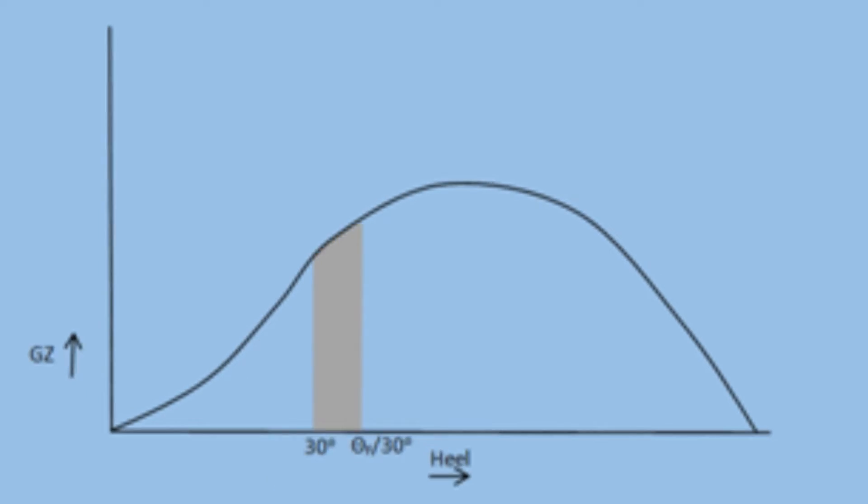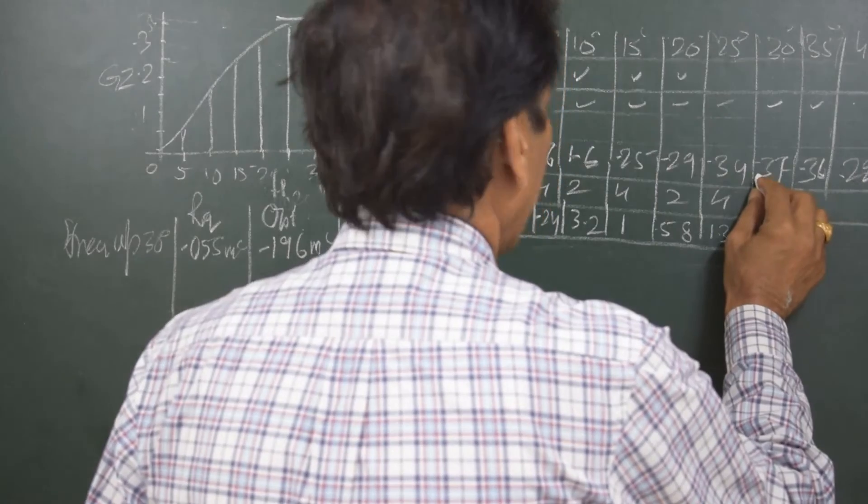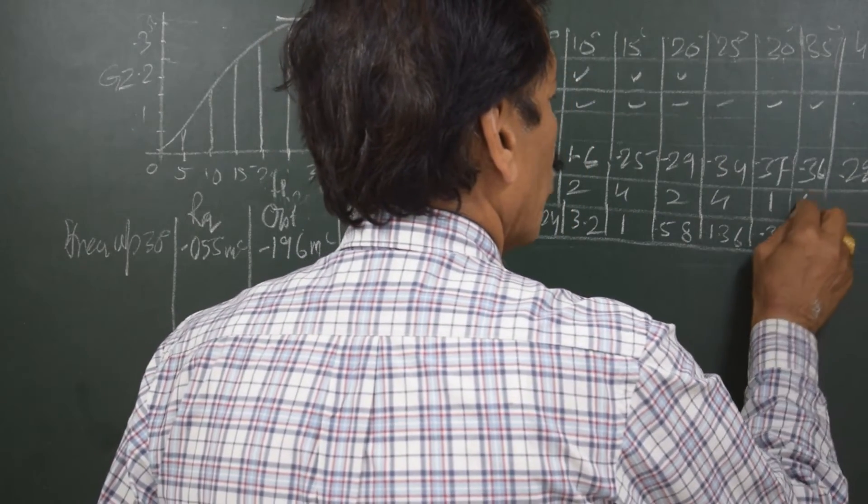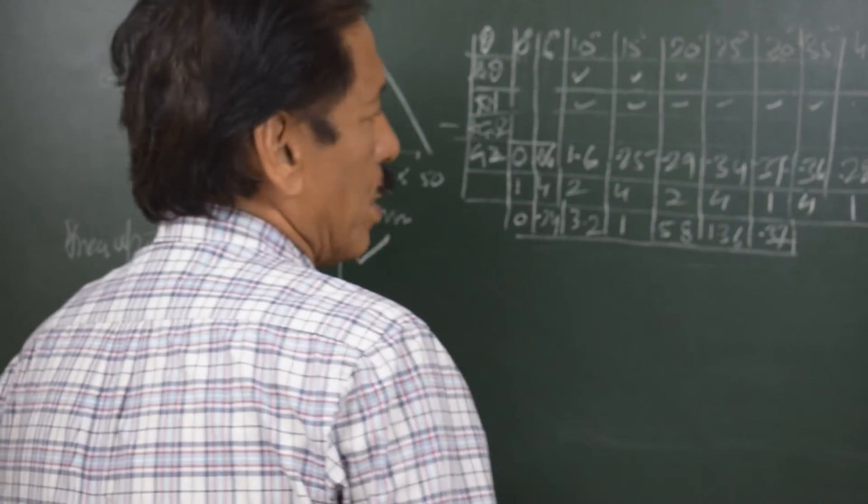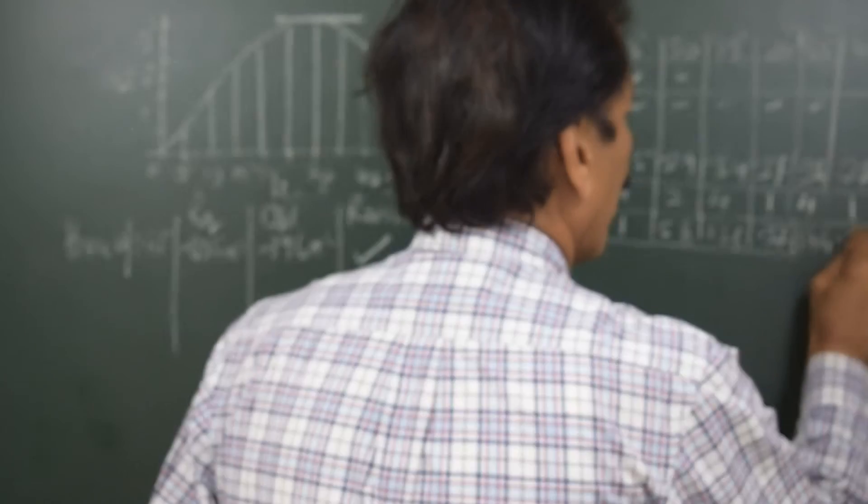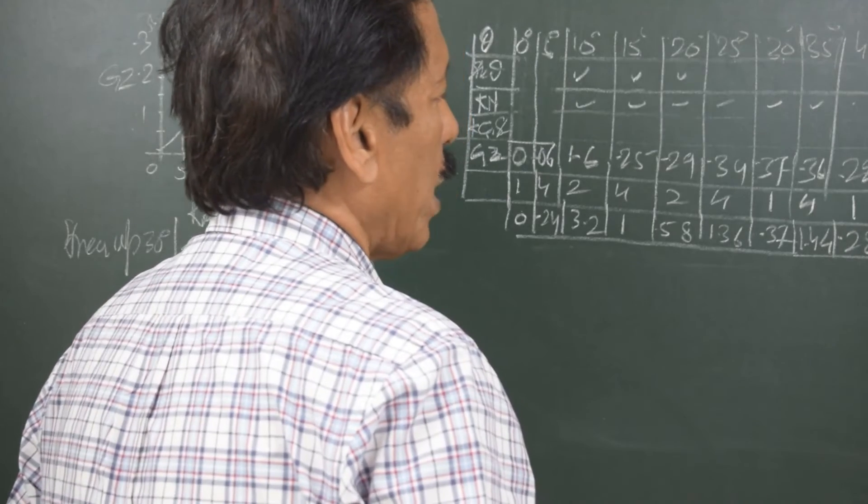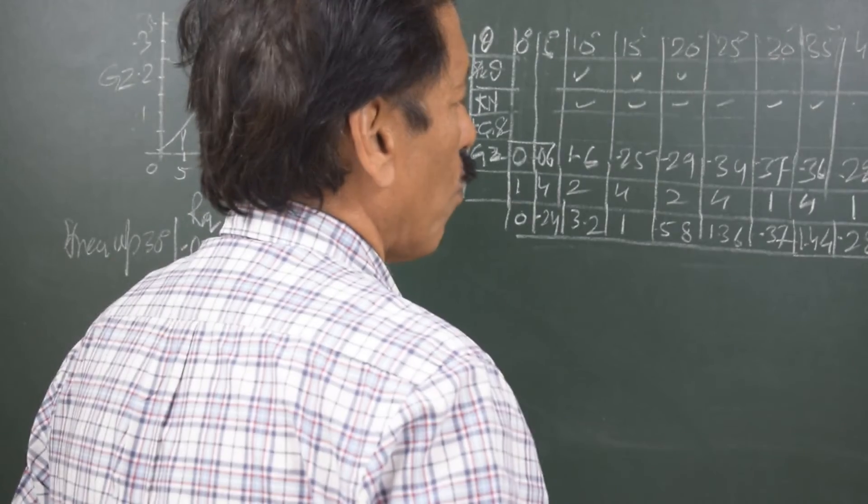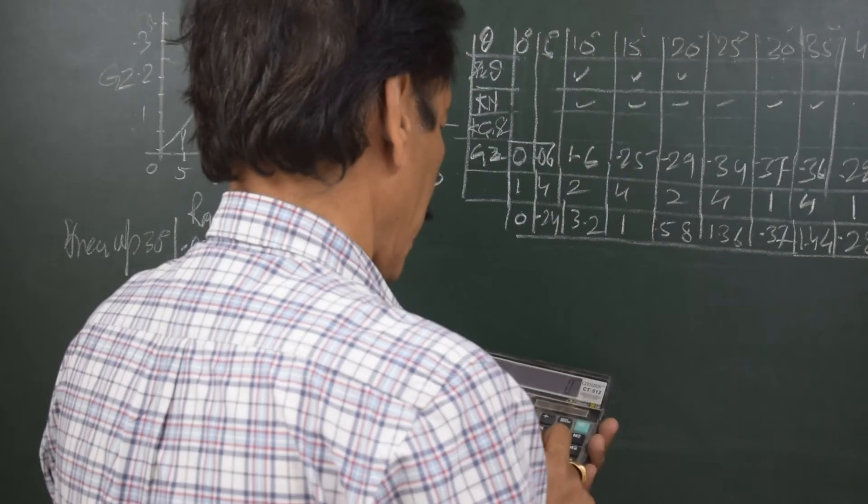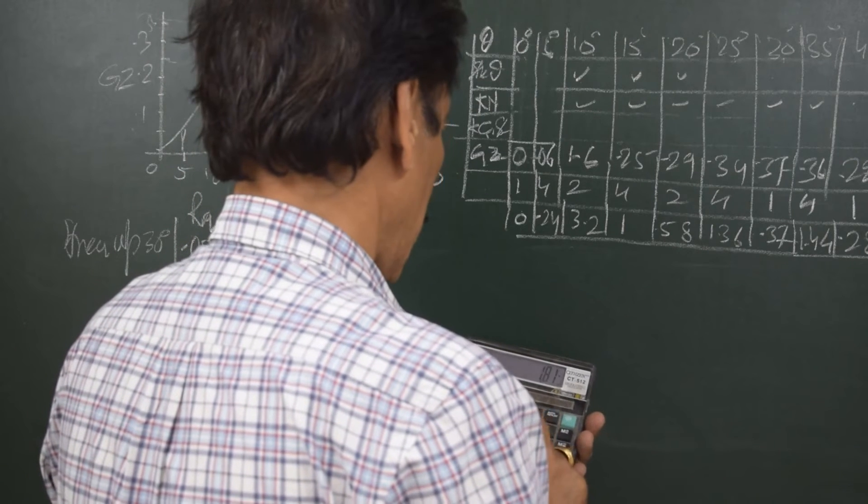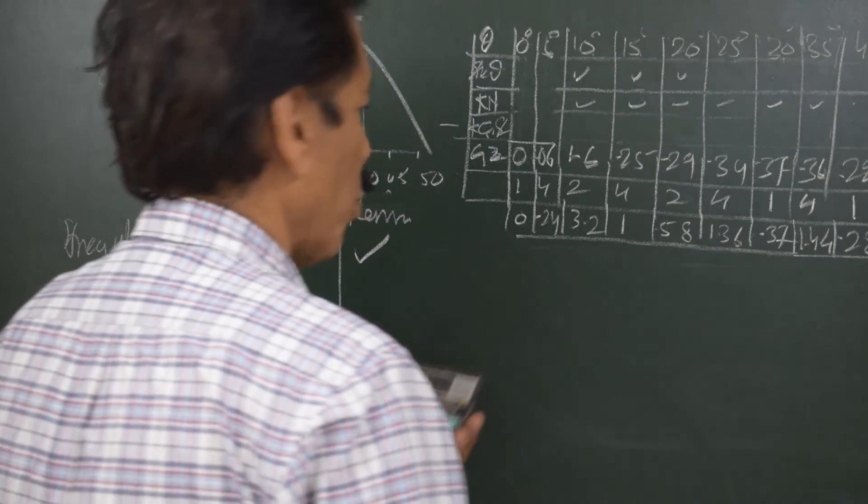Now we also want to find out what is the area between 30 degrees and 40 degrees. We have the ordinates here, the value of GZ is 0.37, 0.36 and 0.28. The multipliers would be 1, 4, 1 and therefore the products of the ordinate and multipliers are 0.37, 1.44 and 0.28. The total is 2.09.